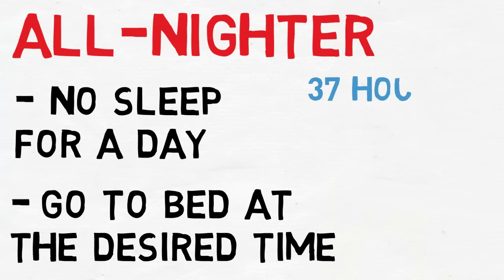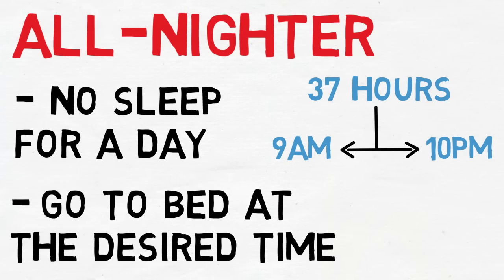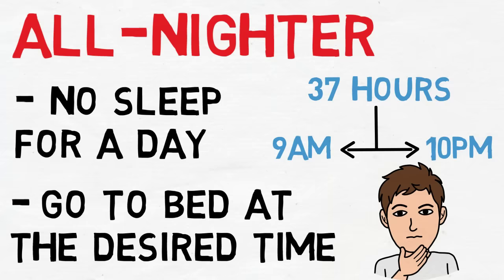Basically you don't sleep for one day and you go to bed at the desired time the next day. This means he needs to stay awake for 37 hours, as he usually wakes up at 9am and his desired bedtime is 10pm. This makes sense to Mike and he plans to do it the next day.